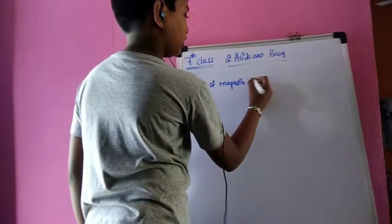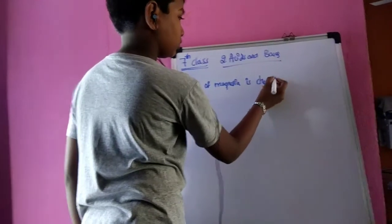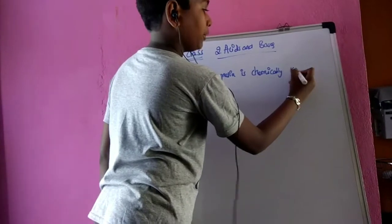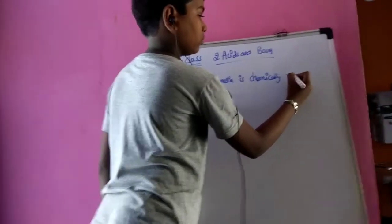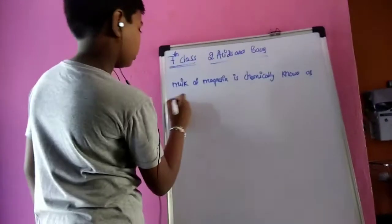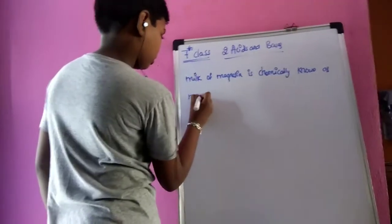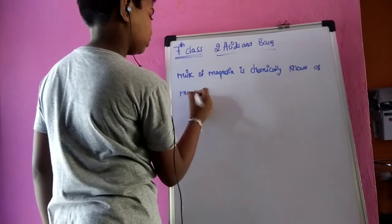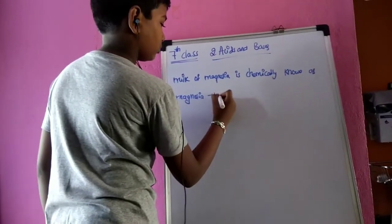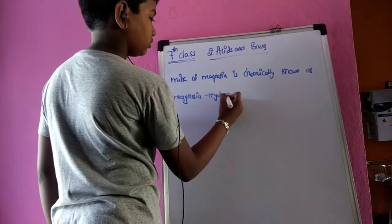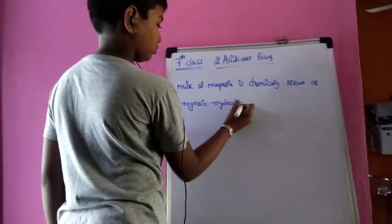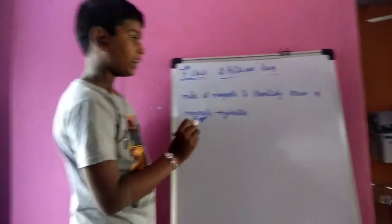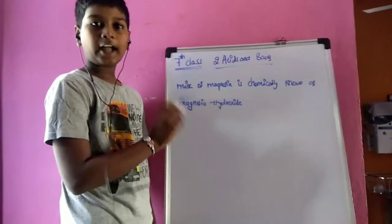Milk of magnesia is chemically known as magnesium hydroxide.